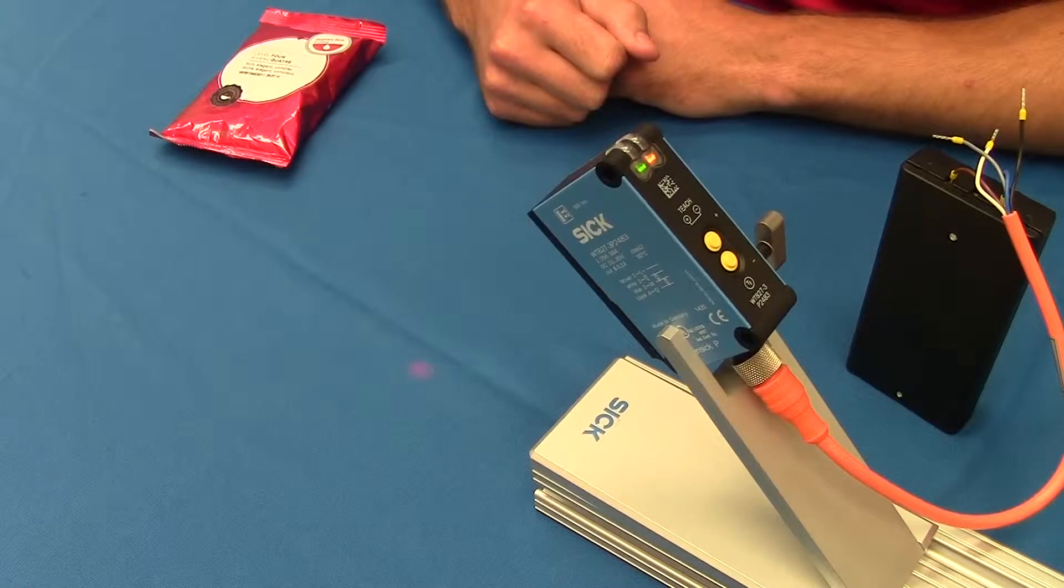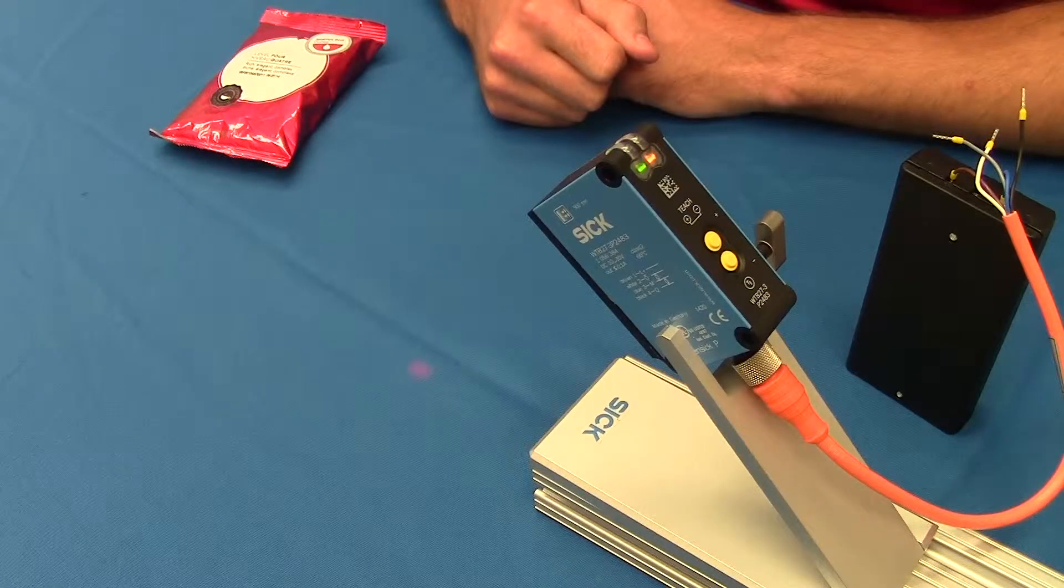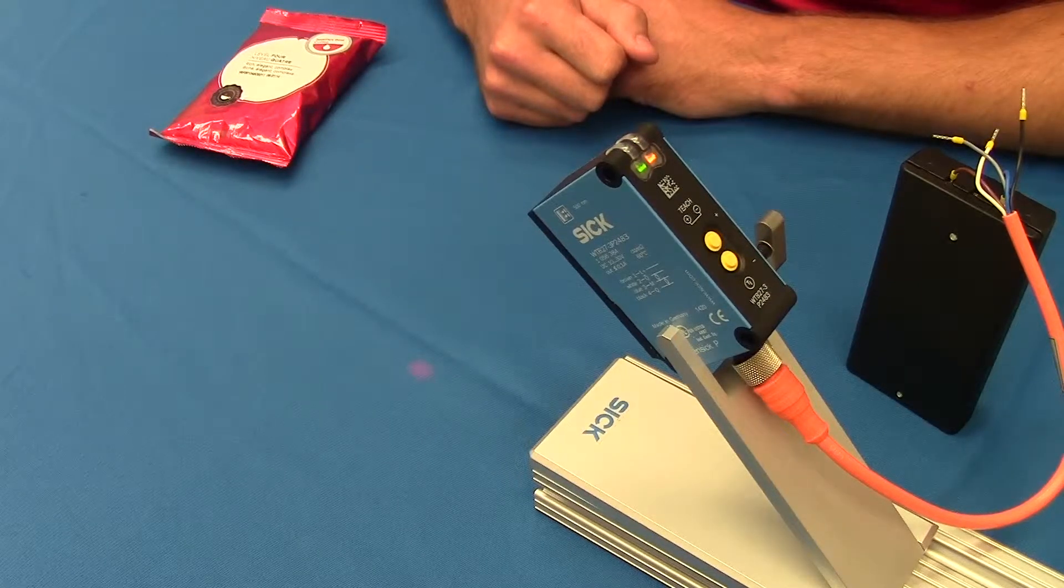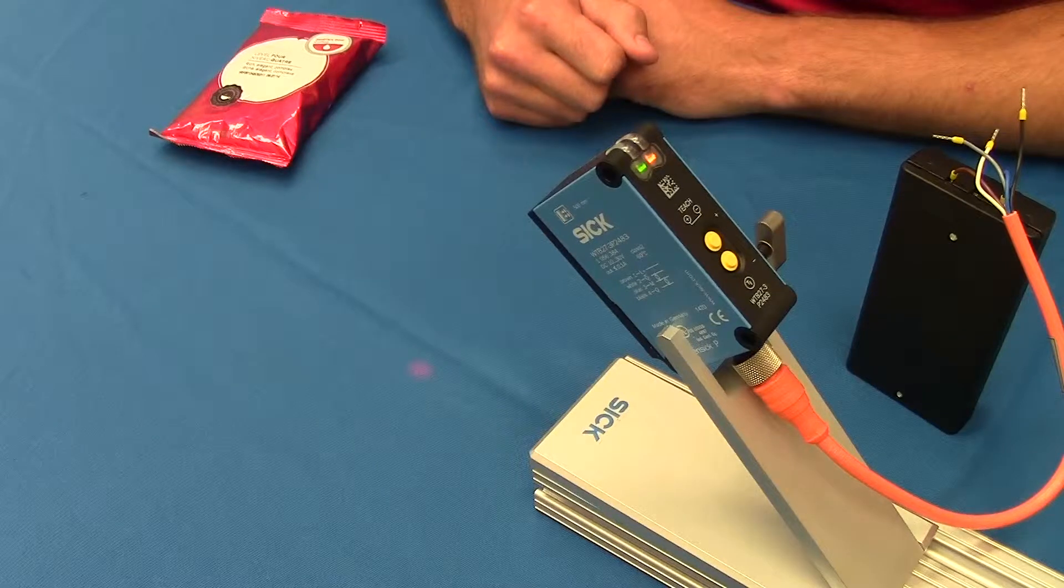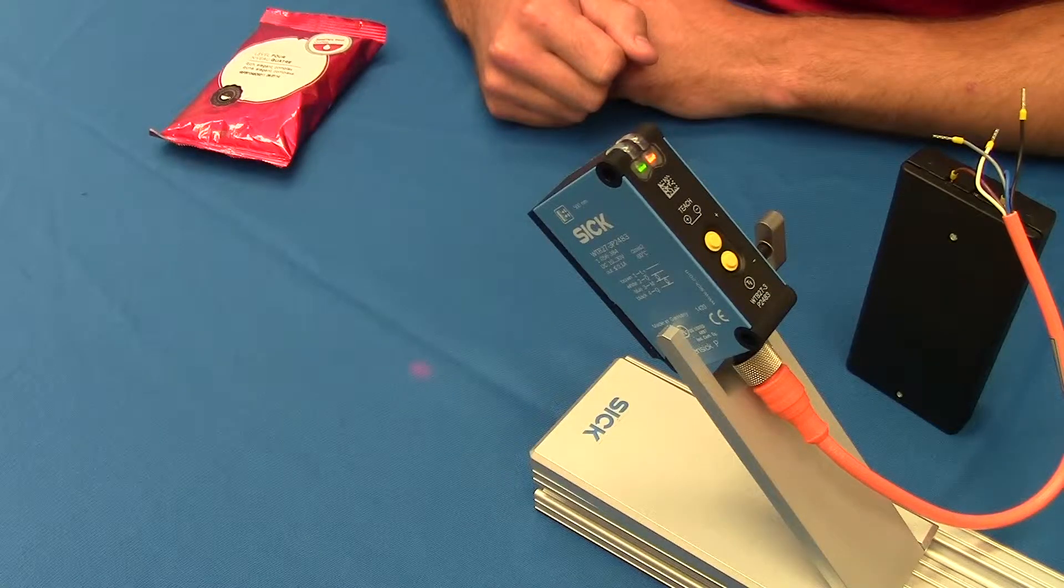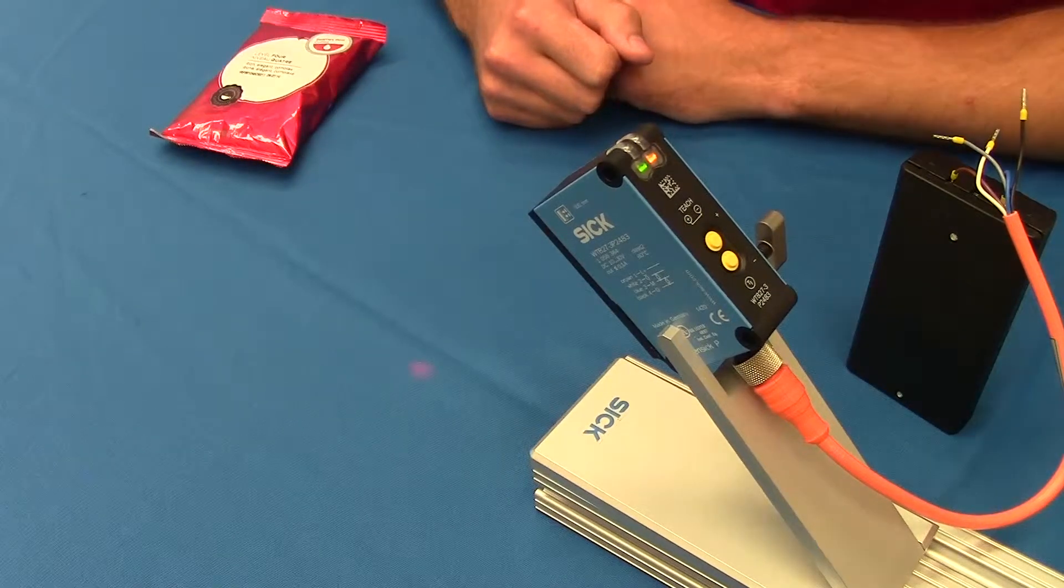To demonstrate the WTB27 multi-pack sensor, its advanced background suppression, and its ability to detect shiny, clear, and irregular shaped objects without false triggering.